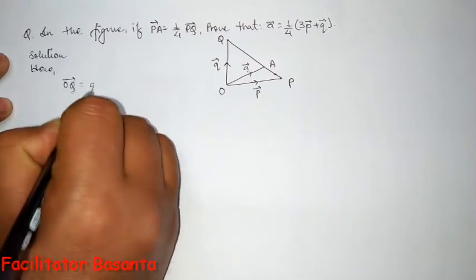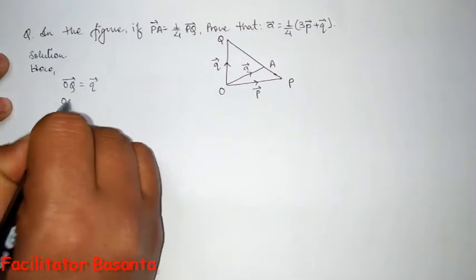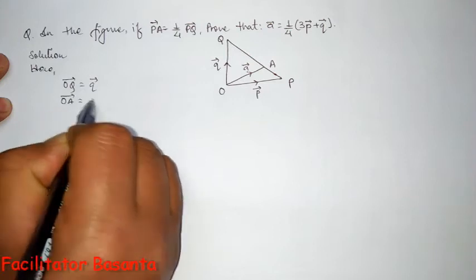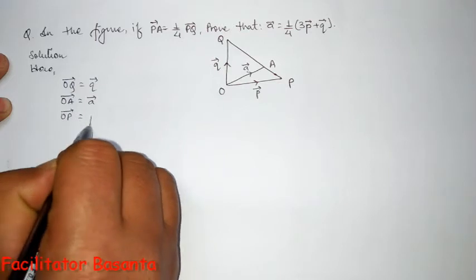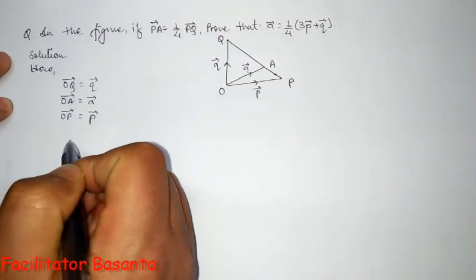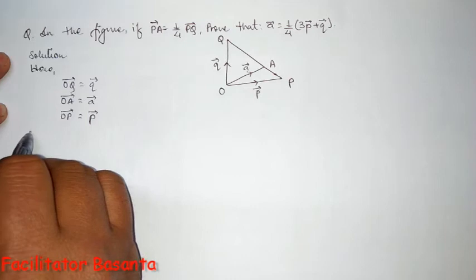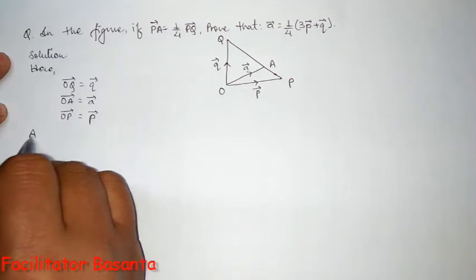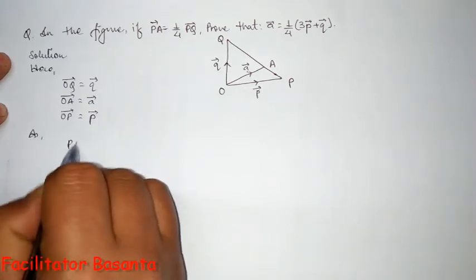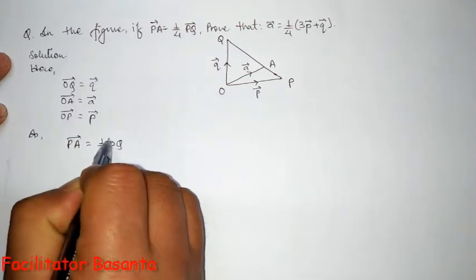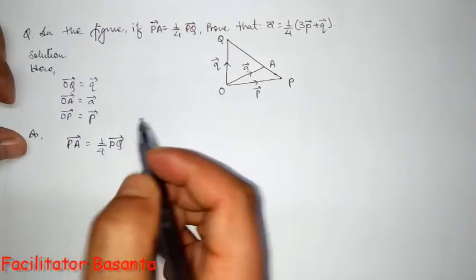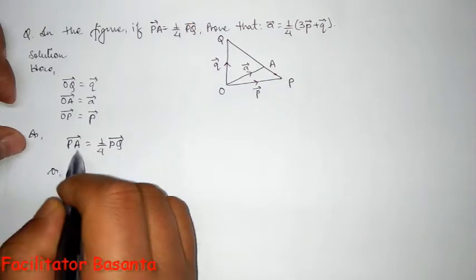OQ vector is q vector, OA vector is denoted by a vector, OP vector is denoted by p vector. As what is given, PA vector equals one-fourth of PQ vector, or in...